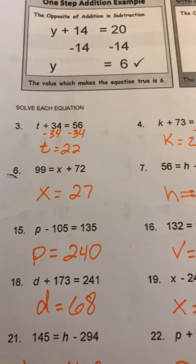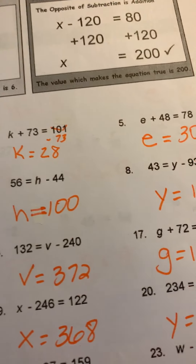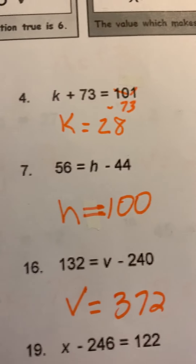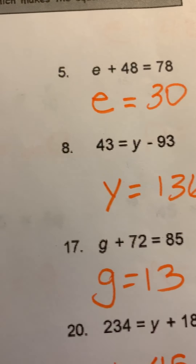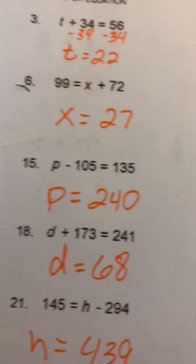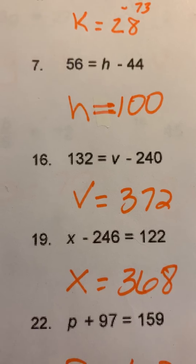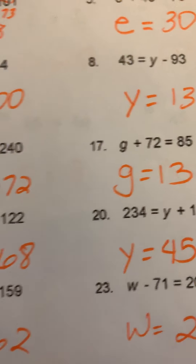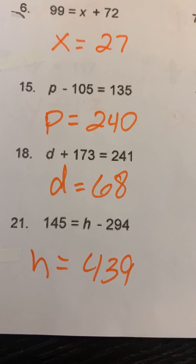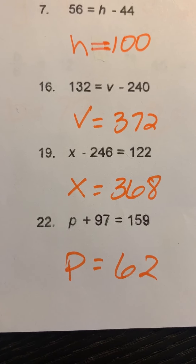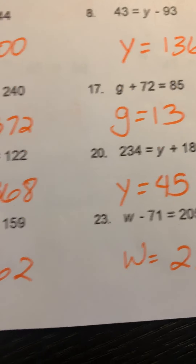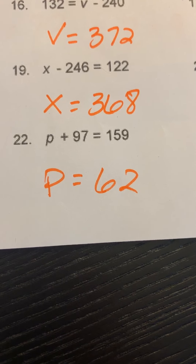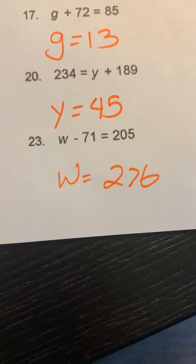So number one T equals 22, 4K equals 28, 5E equals 30, 6X equals 27, 7H equals 100, 8Y equals 136, 15P equals 240, 16V equals 372, 17G equals 13, 18D equals 68, 19X equals 368, 20Y equals 45, 21H equals 439, 22P equals 62, and 23W equals 276.